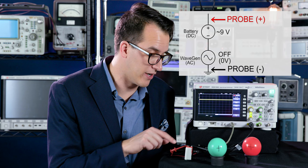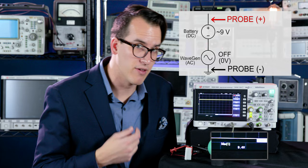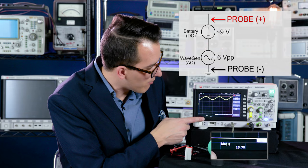And since the wavegen's not on, I'm still seeing about 9 volts. But as soon as I turn on the function generator built into the scope, I see that my voltage jumps up to almost 16 volts.